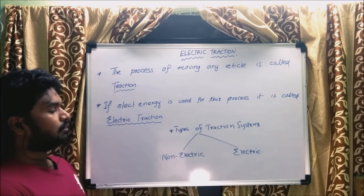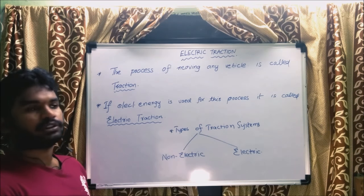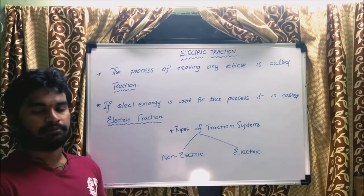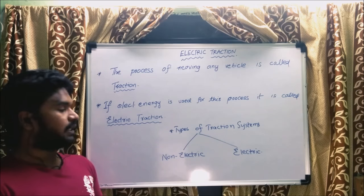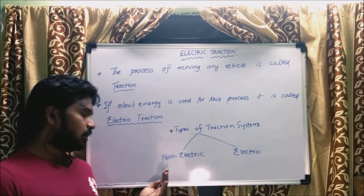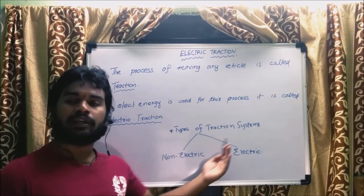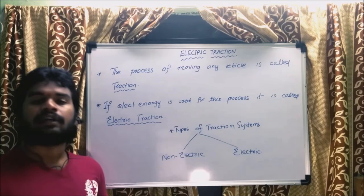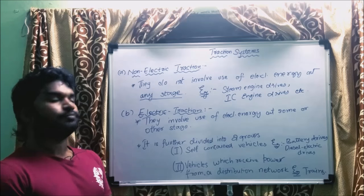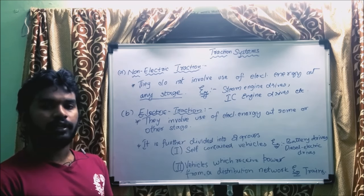Now, what are the different types of traction systems? Since we are electrical engineers, from our point of view, any utilization system can be divided into two categories: electric and non-electric. Similarly, traction can be non-electric traction or electric traction. If it is heating: non-electric heating or electric heating. If it is welding: non-electric welding or electric welding, and so on.